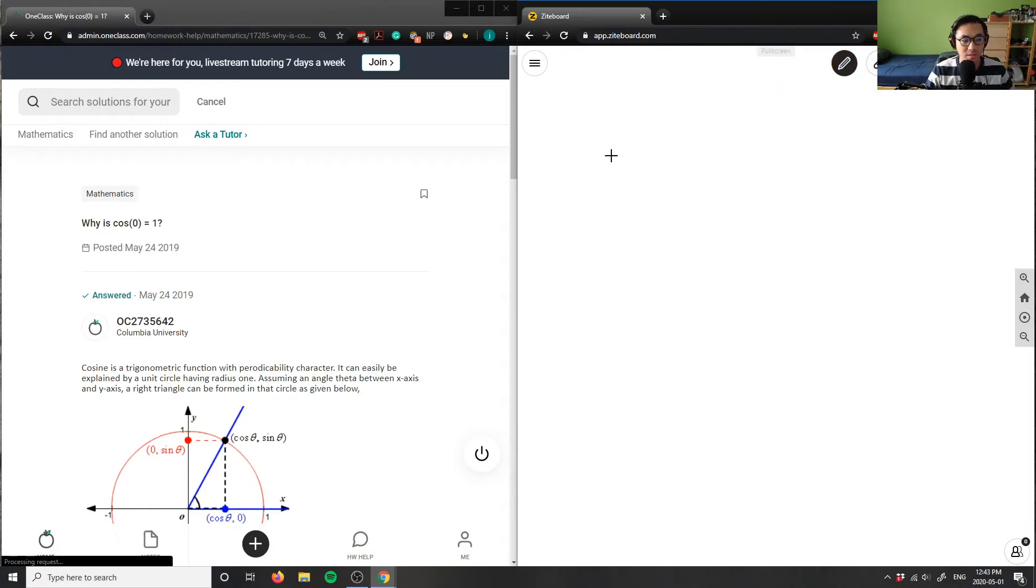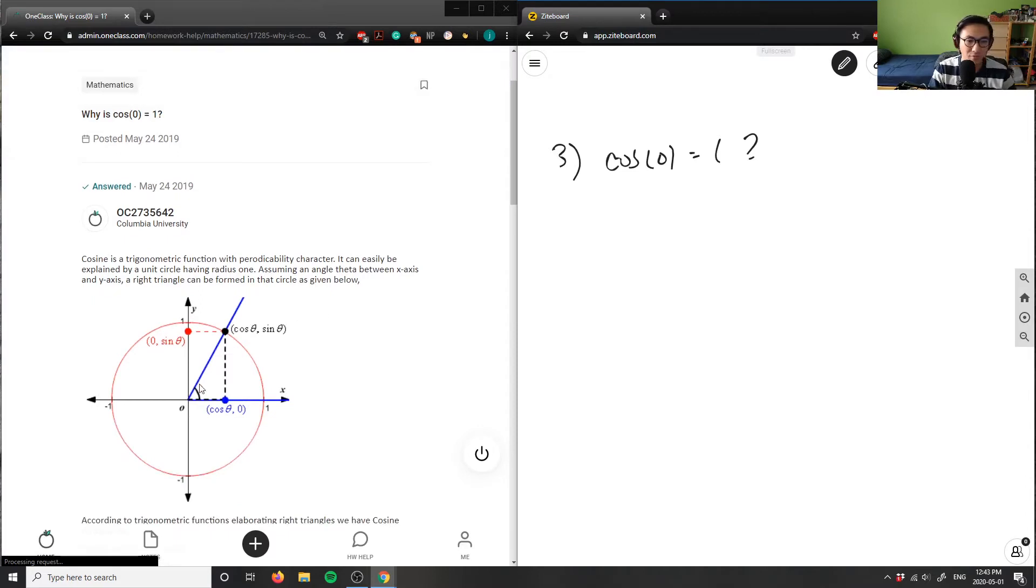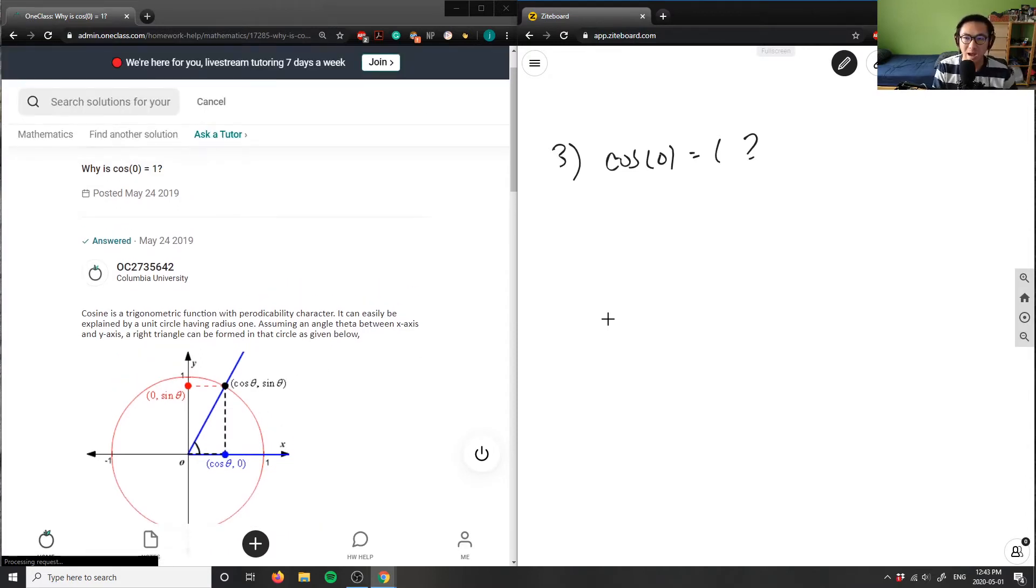It's asking, why is cos 0 equals 1? So you can answer this using the trigonometric circle that they've provided here, or you can just simply graph the function.